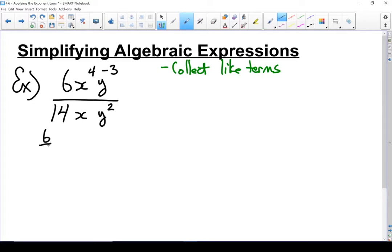Let's start with the coefficients in front. I've got 6 over 14. Then I'm going to move on to my x's. I've got x to the power of 4 over x. And my y's, I've got y to the minus 3 over y squared. Those are all multiplied together.